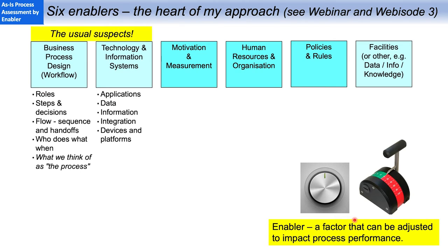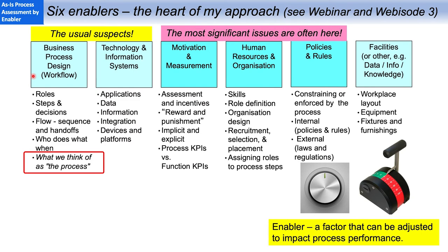The two that everywhere get the most attention are the actual design of the process — who does what when — and the application of technology. This enabler, business process design or workflow, is what we think of as the process. But no process will ever be optimal unless all of the enablers are brought into alignment with the goals and objectives of the process. And most of the time, the most important ones aren't the usual suspects.